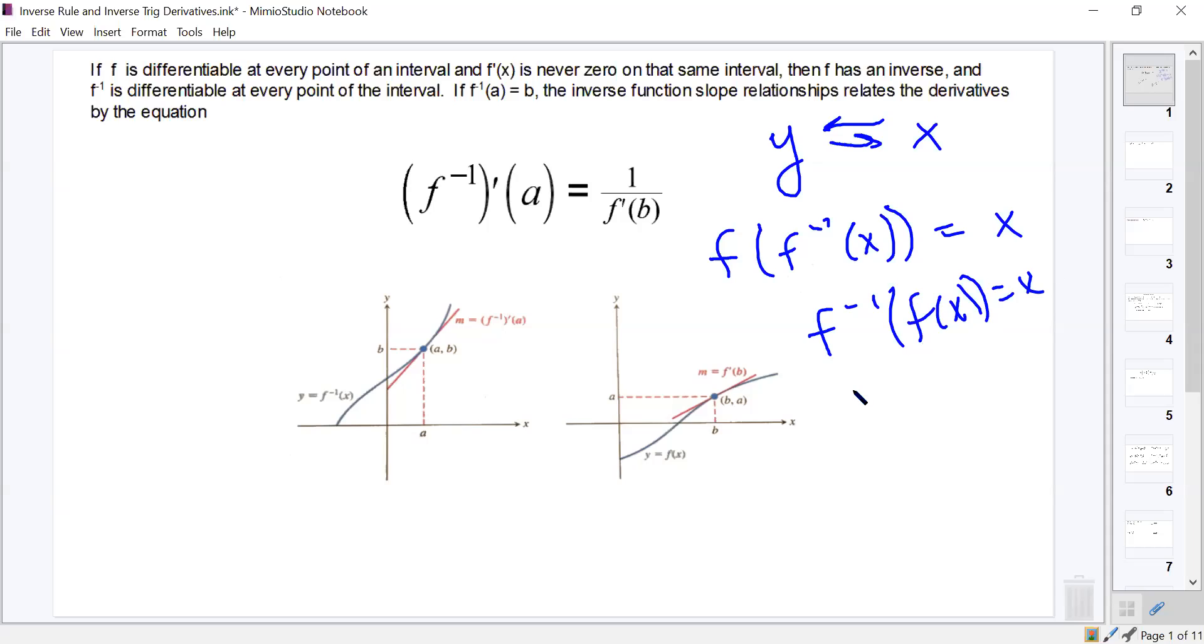Everybody good with that? And we know about points, so like suppose f and g are inverses, or we'll just say f. Suppose f has the point a comma b, what point do you know that f inverse must have on it? b comma a. All right, these are all things you should all just sort of know from previous years.